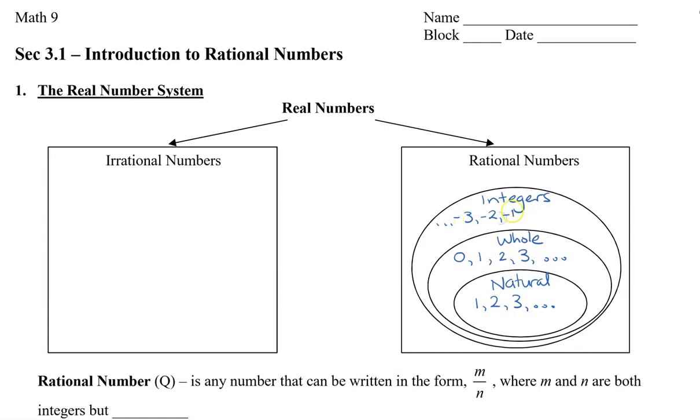negative 2, negative 1, but it still includes 0, 1, 2, 3, and so on. So notice that as we go out in layers, it includes all the numbers that were in the inner side of the inner circles.